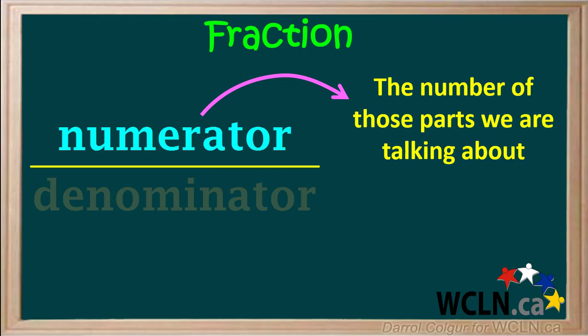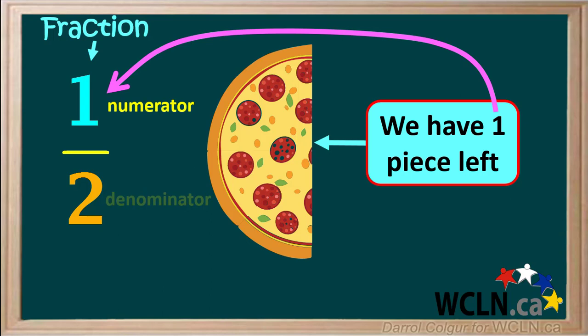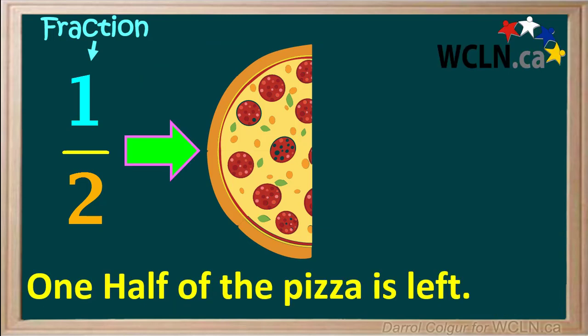Remember, the numerator is the number of parts we're talking about. If we're talking about the one piece we have left, the one is our numerator in the fraction. So the fraction we made is one over two, which is also called one half. We can now say that one half of the pizza is left uneaten.